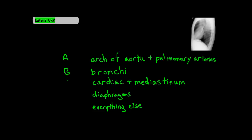To keep things consistent, we'll use the ABCDE method, in which A stands for the arch of the aorta and pulmonary arteries, B for bronchi, C for cardiac and mediastinum, D for diaphragms, and E for everything else — most importantly, the lung fields.